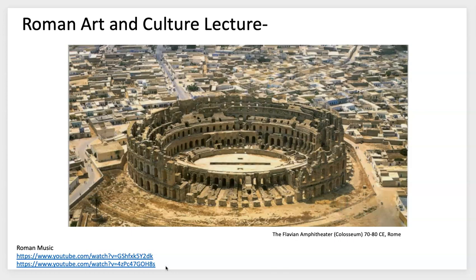Here we're looking at the famous Flavian Amphitheater — the Colosseum. It was constructed over a long period; they're not sure exactly when because they think it may have fallen and been rebuilt on top of itself, but it was finished around 70 to 80 CE.